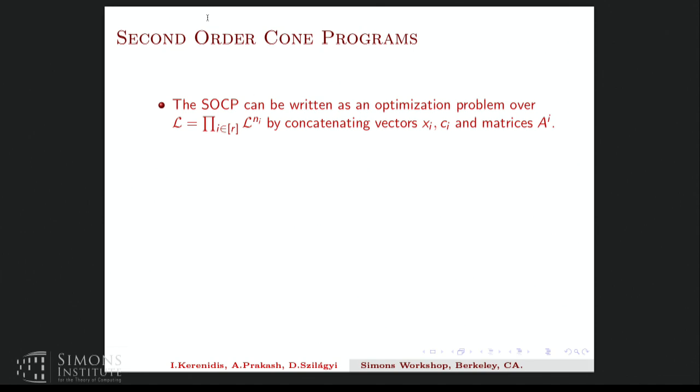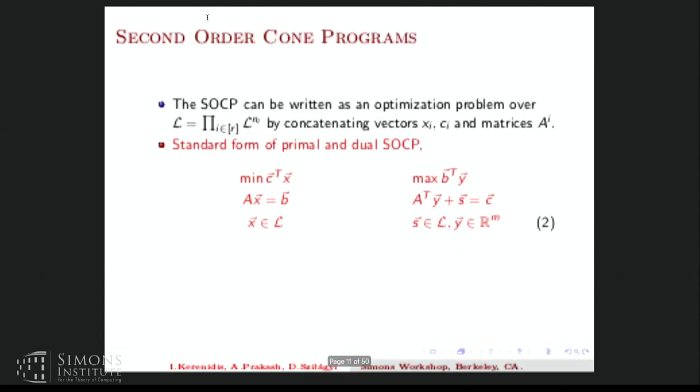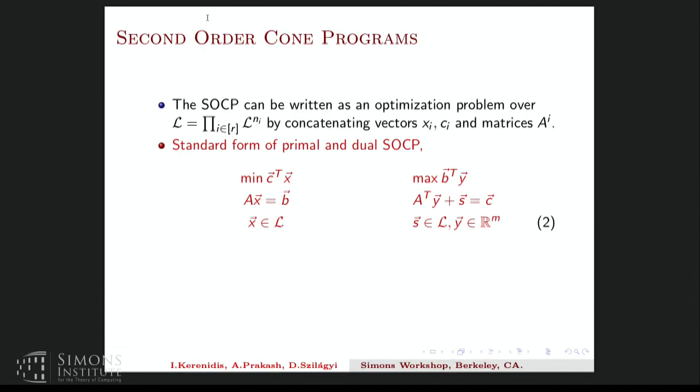So more compactly, it can be written as an optimization problem over the product of Lorentz cones. And in this form, it'll look very similar to linear and semi-definite programs. So here is a standard form of the primal and dual SOCP. So this is obtained by concatenating all the Cs and the Xs on the last slide. So now the problem is to minimize C transpose X, where AX is equal to B, and X belongs to L, where L is the product of all these Lorentz cones. And similarly, one can write the dual, and one sees that it's formally very similar to SDP or LP in the standard form.